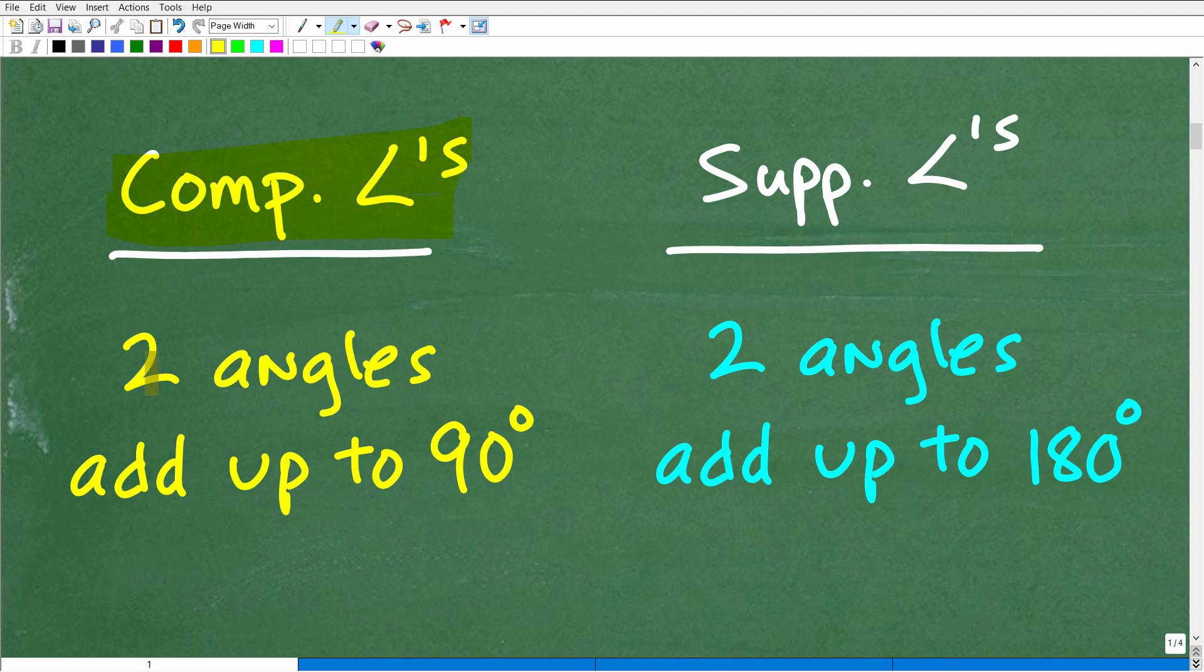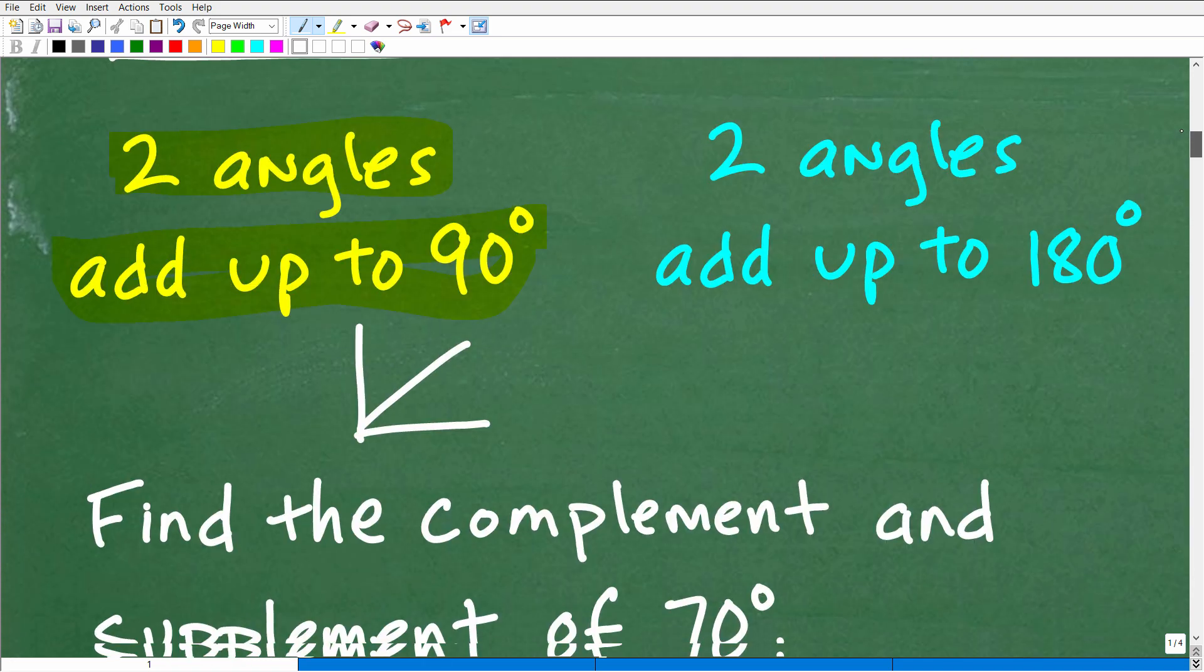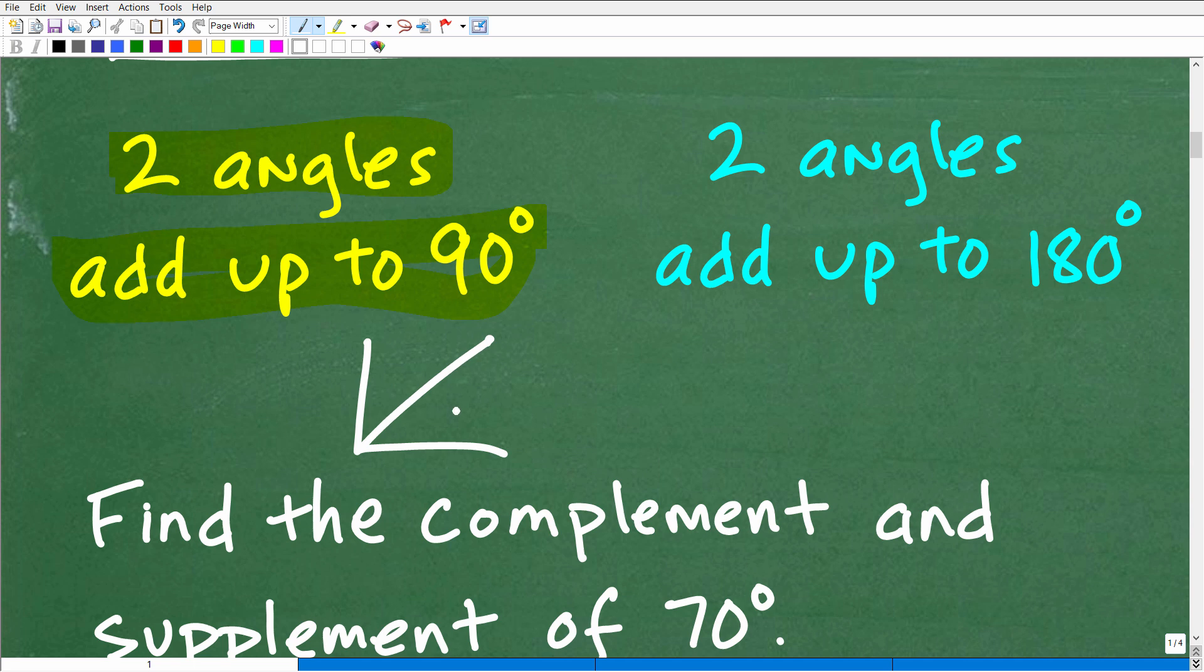So complementary angles are effectively the following: just two angles that add up to 90 degrees. Okay, so any two angles that add up to 90 degrees are complementary angles. Let me just show you right here. Let's say I have some sort of angle, say 60 degrees, right?